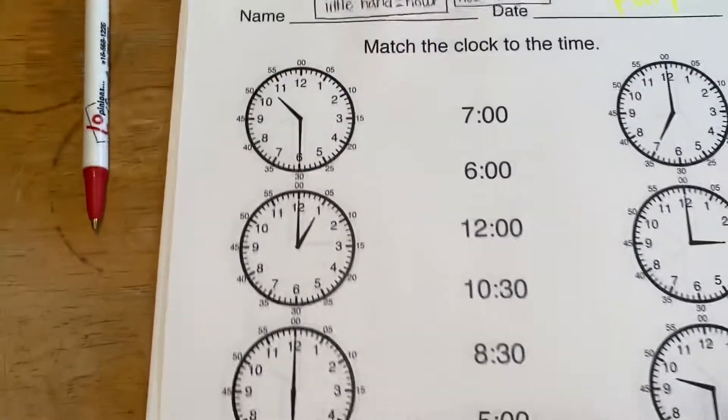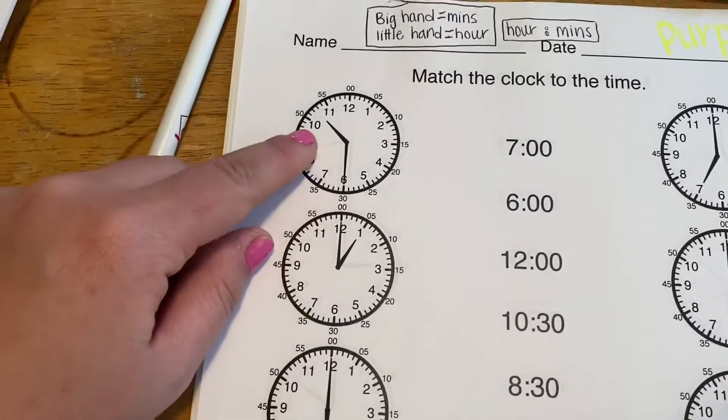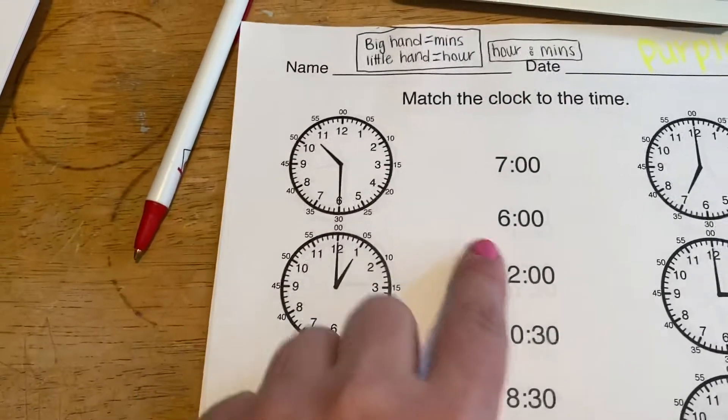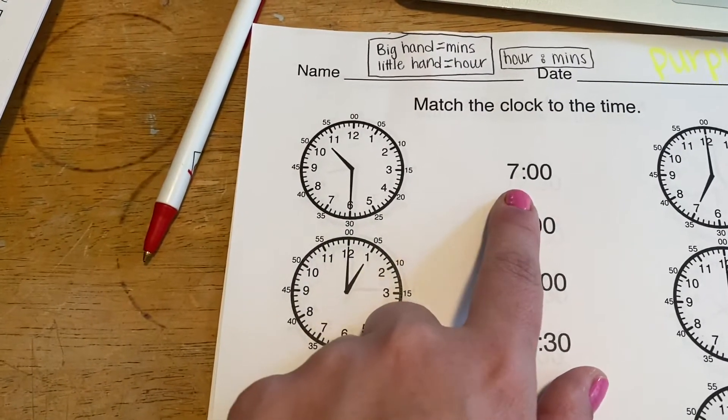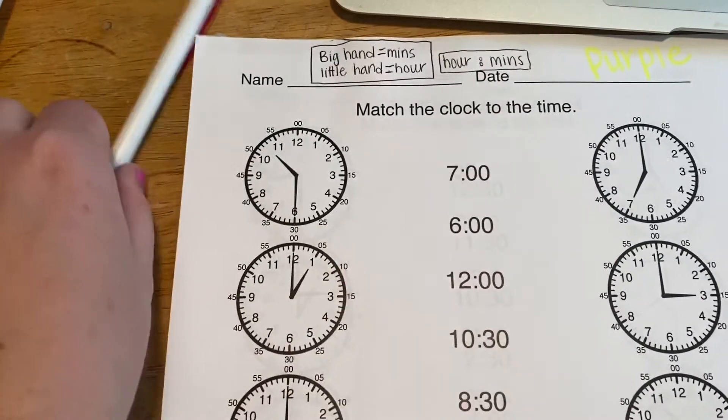So when we're looking at the clocks, we see that there is a big hand and a little hand. And when we're looking at the times, we see hour colon minutes. So that's how you're going to match them.